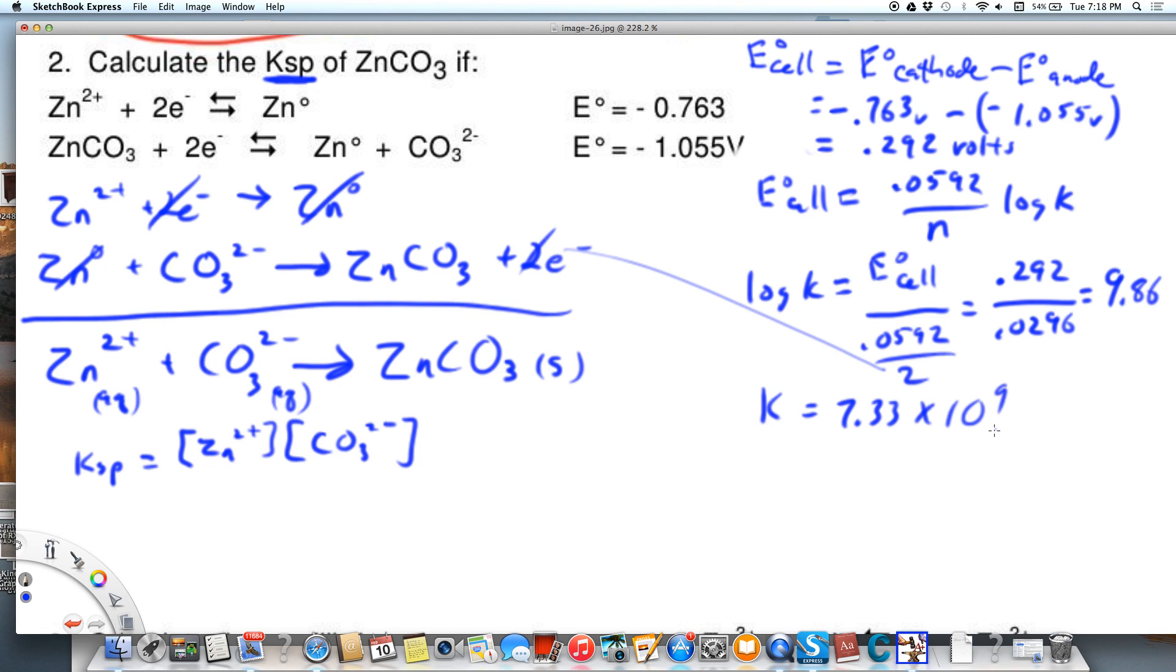Well, that's not Ksp because Ksp for an insoluble compound Ksp is really small and this K is large. This matches though that this reaction would go the way it is here because we want a large K so that we actually have a cell that works, that is spontaneous. So it is spontaneous.